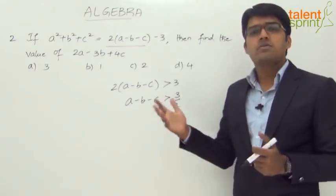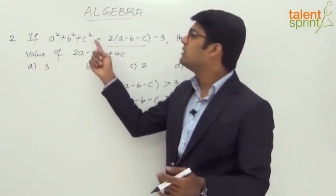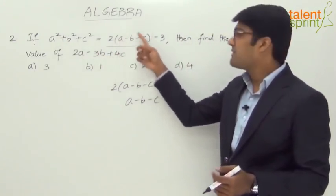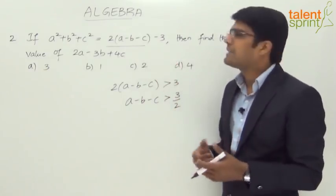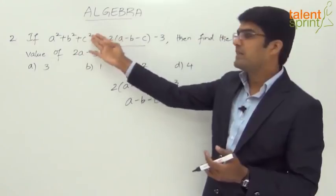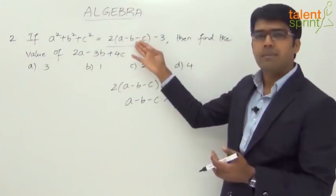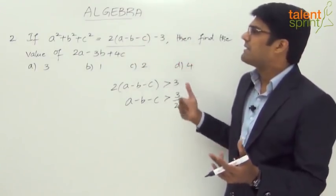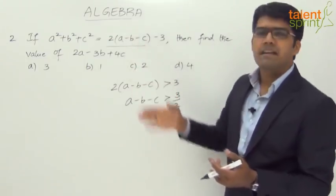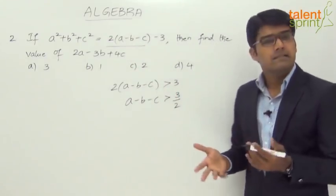If you try the trivial solution a = b = c = 0, the left-hand side is 0, but the right-hand side becomes 0 - 3 = -3, so 0 doesn't work. If you try a = b = c = 1, the left-hand side is 3, but the right-hand side gives 2(1-1-1) - 3 = -2 - 3 = -5, which is negative. If you try 2, the left-hand side is 12 but the right-hand side is again negative. Clearly, trivial solutions don't help.